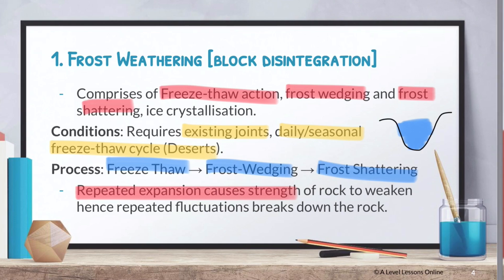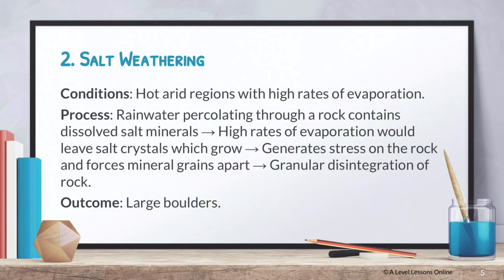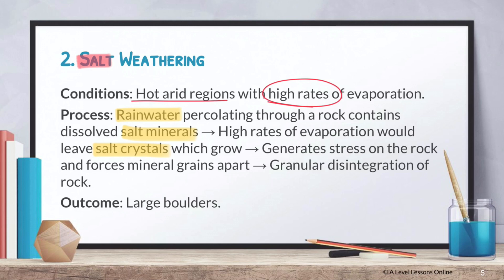Next you have got salt weathering, which is quite similar except that salt weathering requires salt crystals to be left behind. Salt weathering takes place in hot, arid regions with high rates of evaporation — similarly in deserts — whereby rainwater percolating through a rock actually carries a lot of minerals in it as well. This rainwater will contain a lot of salt minerals, and when left behind due to the high rates of evaporation, it will leave salt crystals which grow. When these salt crystals grow, they create a lot of stress on the rock, causing granular disintegration. As a result, you're going to have large boulders left behind as a result of salt weathering.